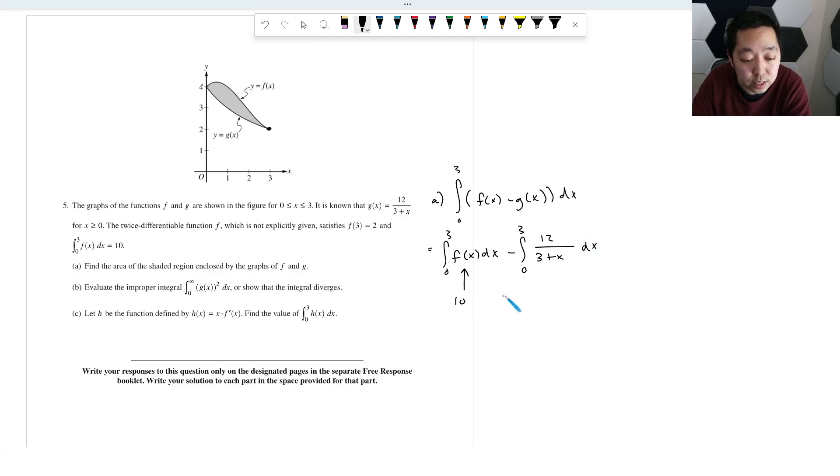And then this thing minus this is going to be natural log absolute value of three plus X from zero to three. We'll put a 12 in front there because that 12 pops out. I just like to confirm the derivative of that's one over three plus X times the 12. So that would give me that. And so it's gonna be 10 minus 12 times, and I'm going to just plug in three and zero, ln of six minus ln of three.